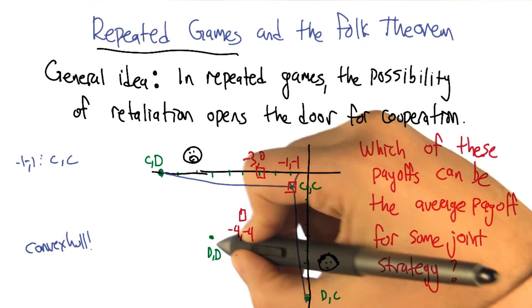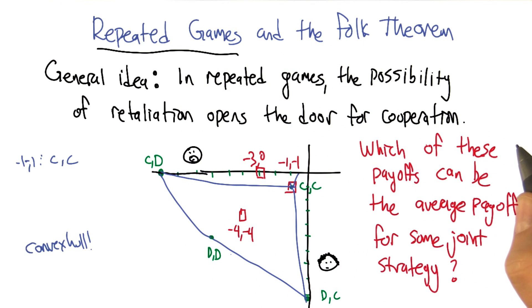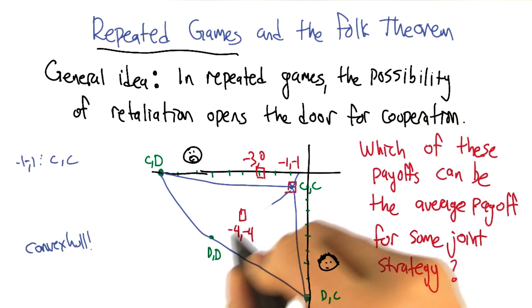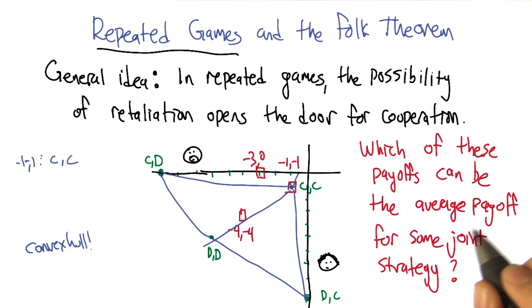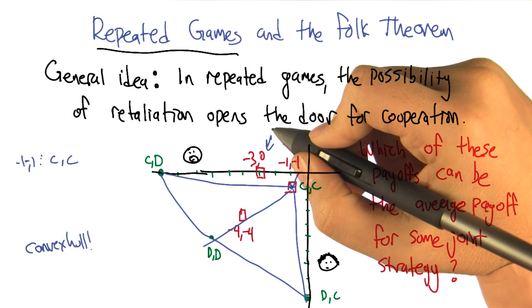Well, achievable averages how? How would you achieve things inside the convex hull? I would appropriately average them. So in particular, the first thing I noticed that minus three, zero is outside that. So it can't be something you can achieve.